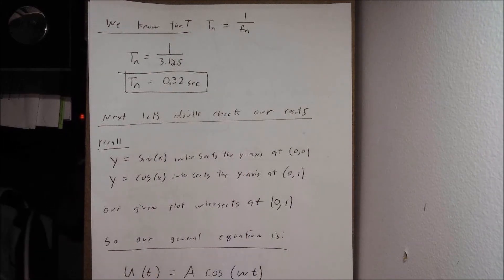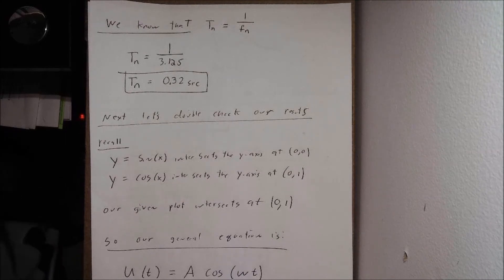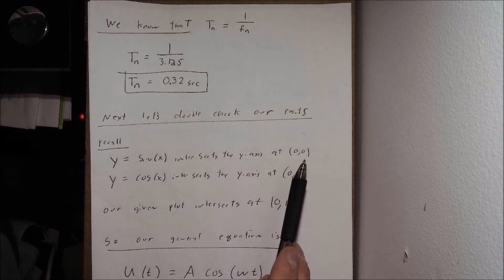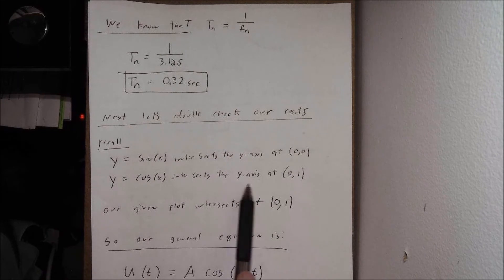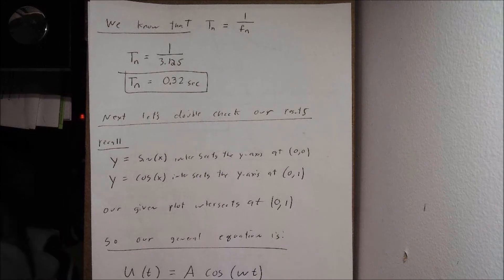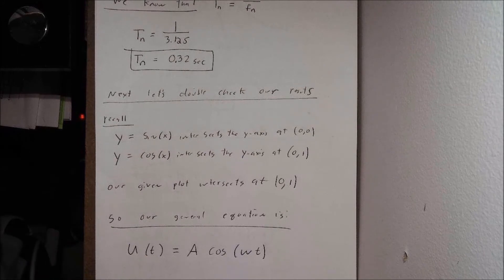Now let's do a double check. We'll replot this based upon the calculated natural frequency, period, amplitude, and y-axis intercept to see how the two plots compare. Recall that y equals sine of x intersects the y-axis at (0, 0), but y equals cosine of x intersects the y-axis at (0, 1) — which is our case. So we're dealing with a cosine function. Our general equation is u(t) equals A times cosine of omega times t.